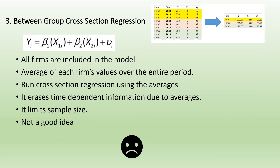A third approach is taking the average of firm 1, firm 2, and firm 3, then running a cross-section regression using those averages. But this is also not a good idea: all firms are included but averaging erases the time-dependent information completely. The information coming from time is deleted, and it also limits the sample size — not a good idea.